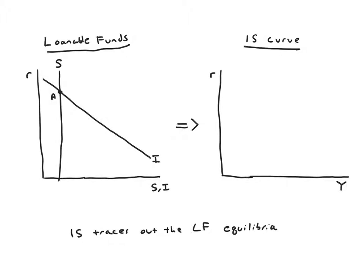The savings curve I've drawn represents saving at a specific level of income — we'll call it Y1. Maybe this is a thousand dollars of GDP. At that level of income, people save a relatively small amount, and that leads us to equilibrium point A with a quite high interest rate. On the right-hand diagram, at income level Y1, we plot that associated high interest rate, giving us point A.